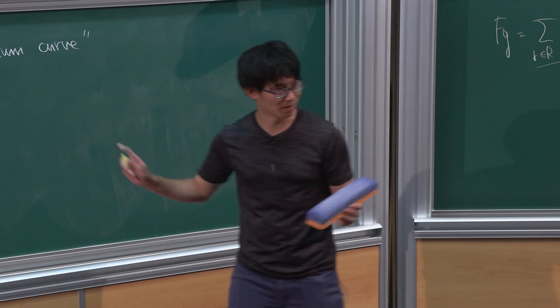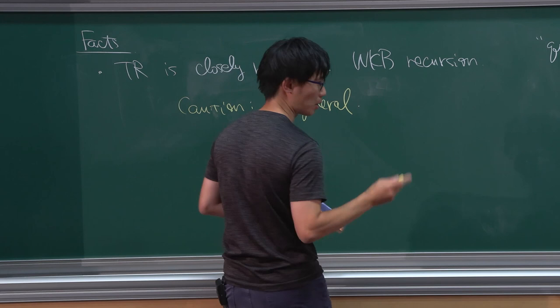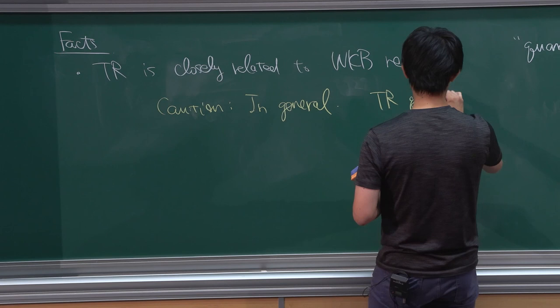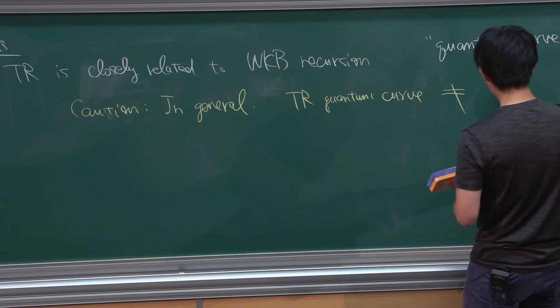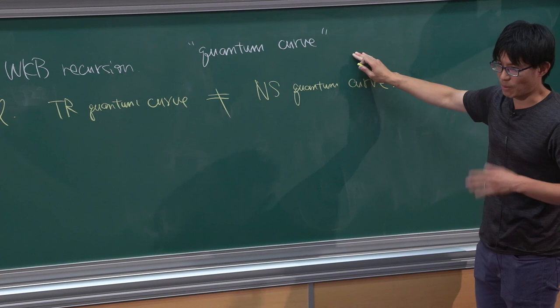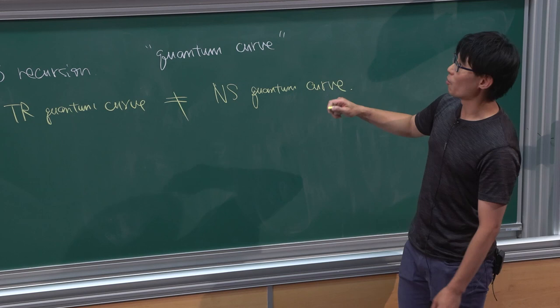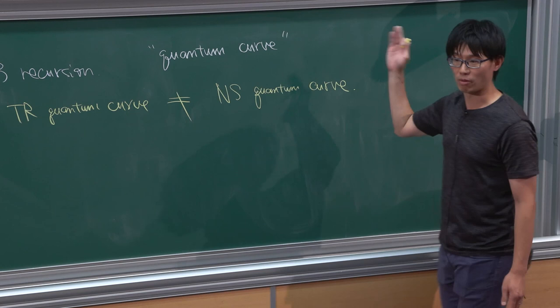Yes, this is what I want to mention now. There is a caution: in general, the topological recursion quantum curve is not the same as the Nekrasov-Shatashvili quantum curve discussed by Rotter yesterday. In particular, if the spectral curve has genus greater than or equal to 1, these two are totally different. But in genus-zero situations they may accidentally coincide. For example, the topological recursion quantum curve of the Weber spectral curve is nothing but the Whittaker-Weber equation.